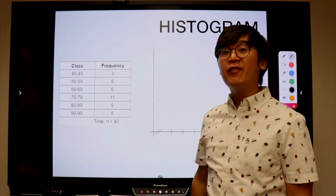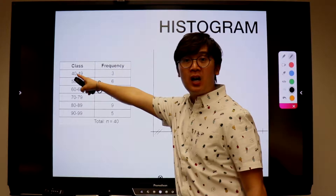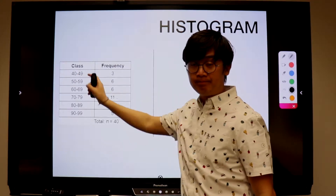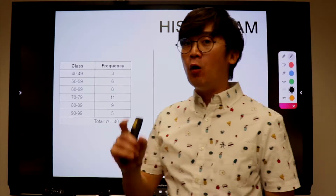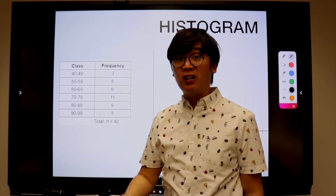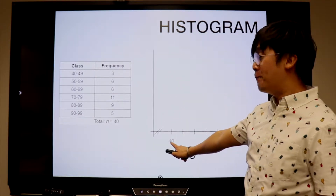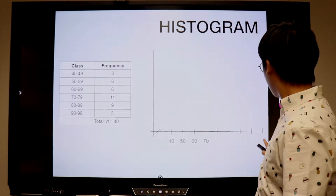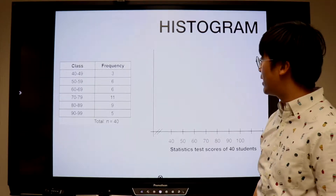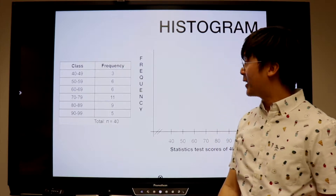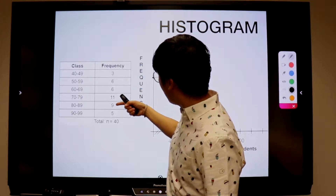Put that symbol if you're not starting at zero so they would know you started at the minimum. If you start at 10, you still put that symbol. The only time you don't place this breaker is when you start at zero. So this is going to be my minimum which is 40, all the way through 100. This will be my statistics scores for my 40 students, and my frequency is 3, 6, 11, 9, and 5.